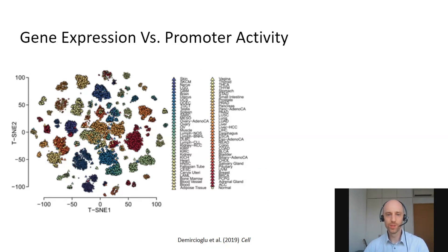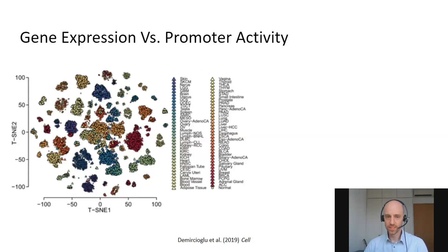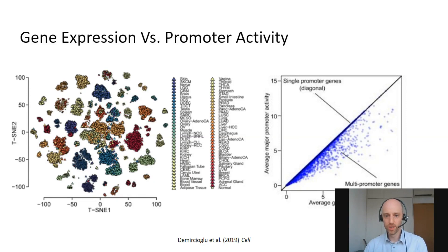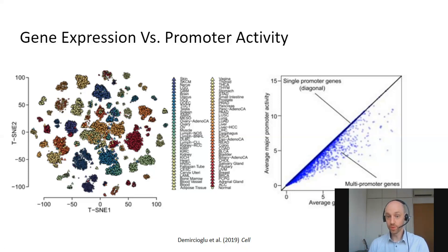When we apply PROACTIVE and estimate promoter activity for all these samples, the first thing we see in a t-SNE plot is that they cluster by tissue — that's largely expected and also what we would see with gene expression analysis. So that's not so surprising, because essentially promoter activity captures gene expression. But there's something additional beyond gene expression. On the x-axis we plot average gene expression and on the y-axis the average major promoter activity. Points on the diagonal are genes that use just one promoter, so the promoter completely explains the gene expression. But all points below the diagonal are genes where the major promoter does not completely explain gene expression — these are genes that use alternative promoters, which we can now study in detail.